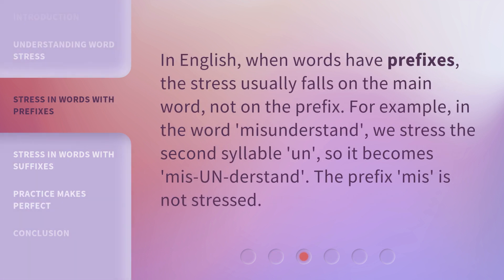In English, when words have prefixes, the stress usually falls on the main word, not on the prefix. For example, in the word 'misunderstand,' we stress the second syllable, 'un,' so it becomes 'mis-UN-derstand.' The prefix 'mis' is not stressed.